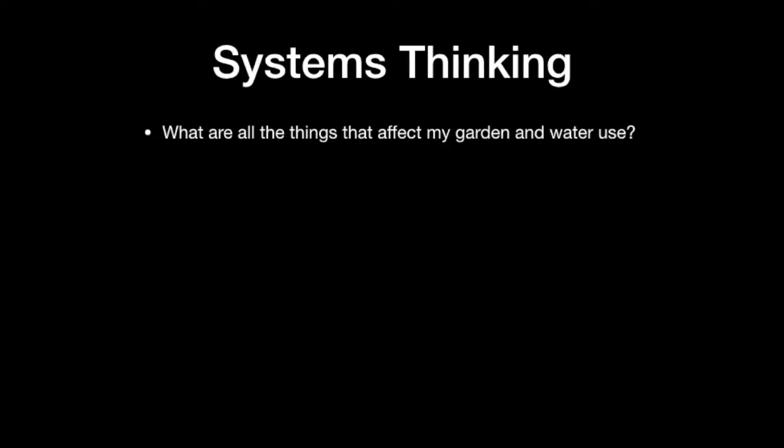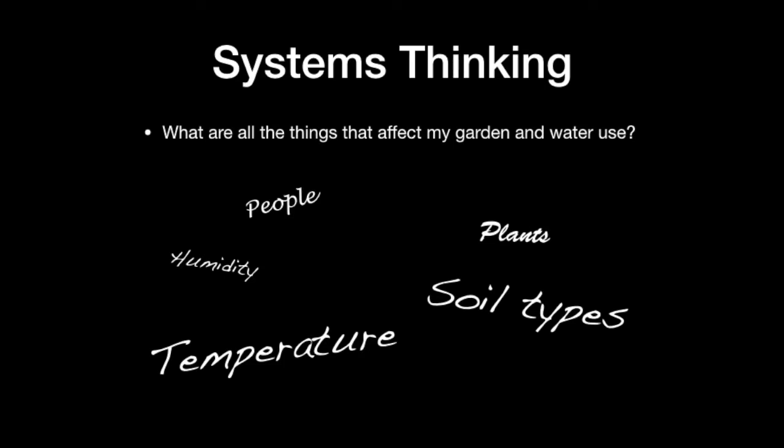Another way of looking at this is to use systems thinking to get some idea about all the components that contribute towards the problem. A brainstorming session might come up with a whole bunch of different ideas. We haven't fully exhausted all the different aspects of this system — there are things such as the availability of water, the type of water, whether the water is salty or not, the range of plants, and the size of the garden. All of those are components of this system.